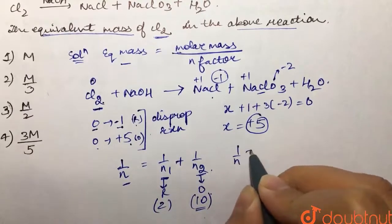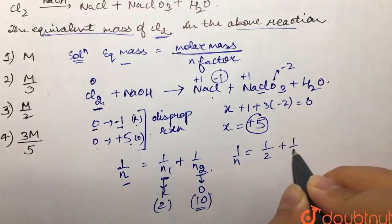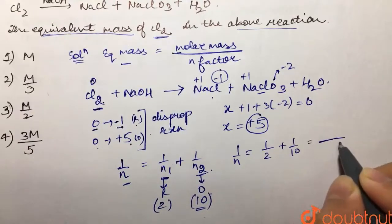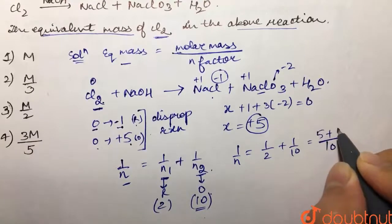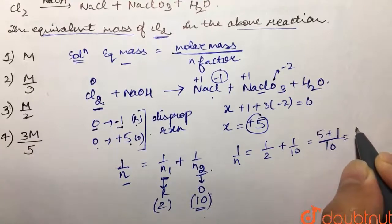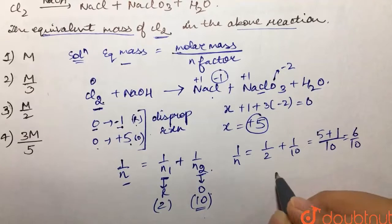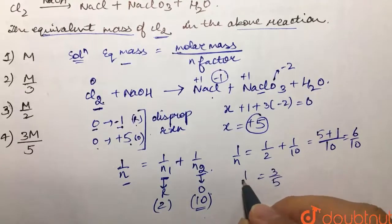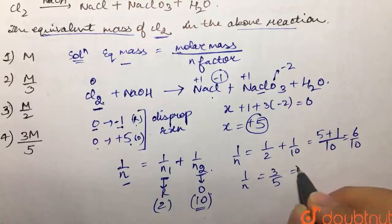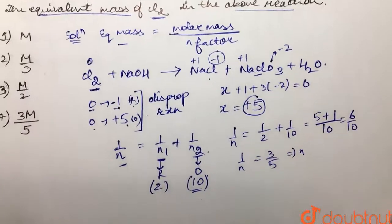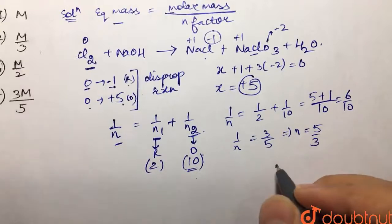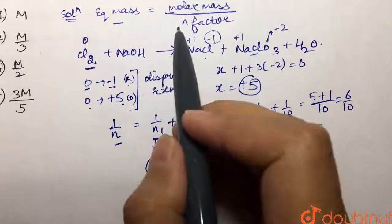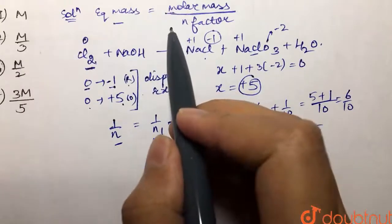Now: 1/n = 1/2 + 1/10 = 5/10 + 1/10 = 6/10 = 3/5. Therefore n = 5/3.